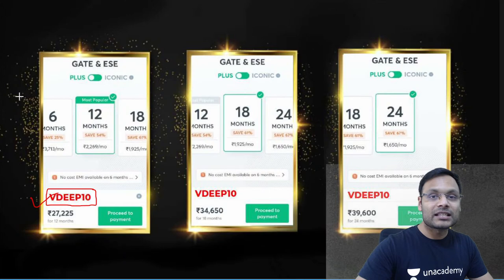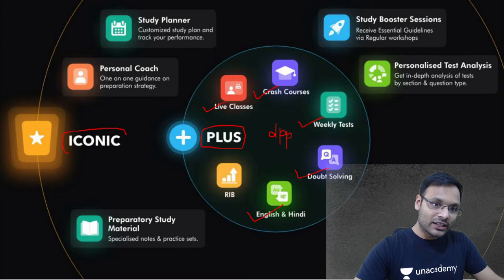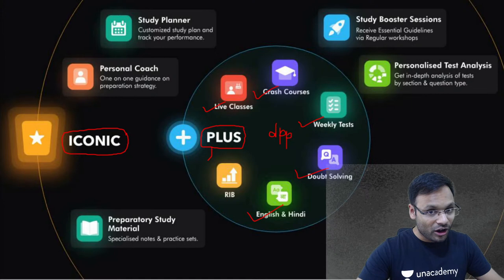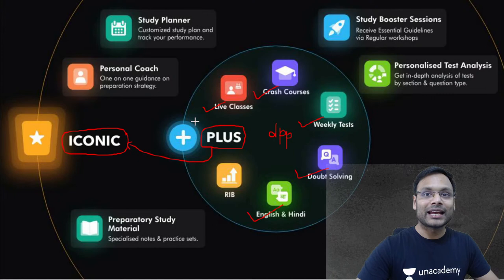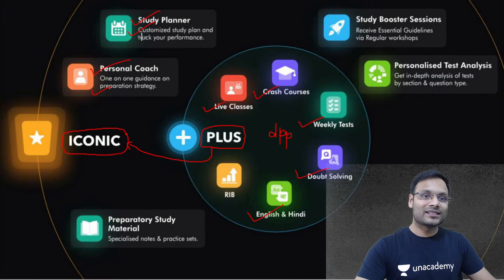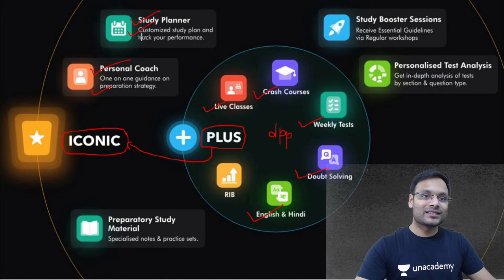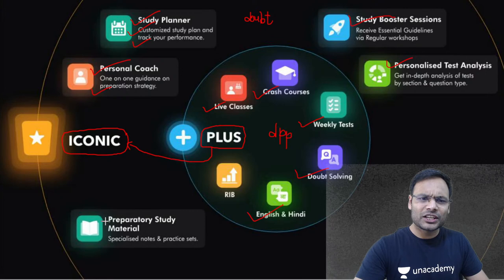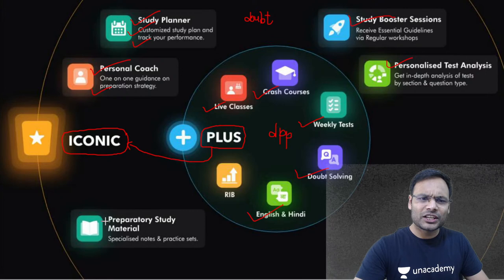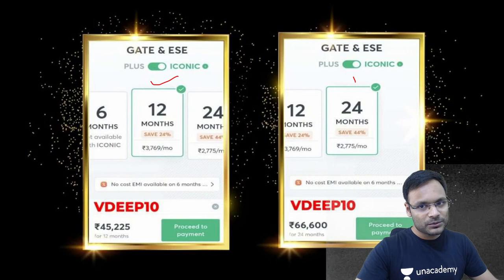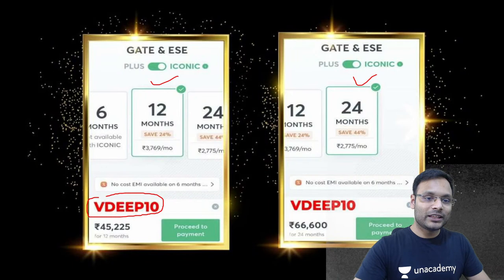There is another subscription — the Iconic one — which gives you all the benefits of Unacademy Plus plus a personal coach who will prepare your preparation strategy, give you a study planner, customize the study plan, provide performance tracking, personalized doubt solving, personalized test analysis, booster sessions, revision sets, and notes. If you use code VDIEP10, you get 10% discount plus my personal guidance and my entire team's support.